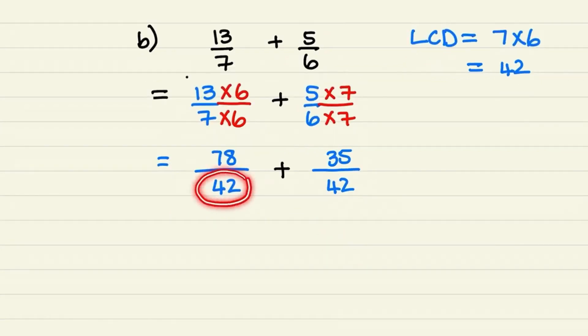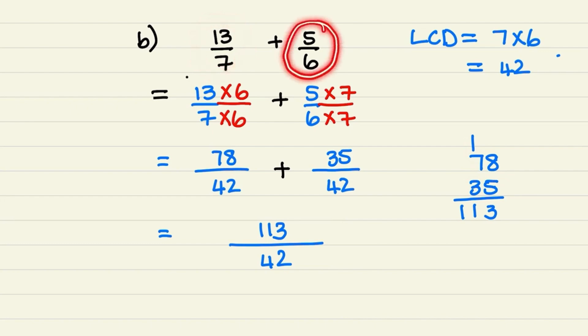So now that the denominators are the same, we can add the numerators together. So 78 plus 35 is 113. So finally, we have 13 over 7 plus 5 over 6 is equal to 113 over 42.